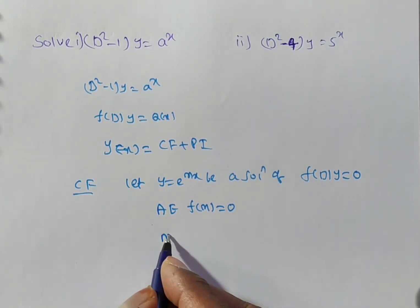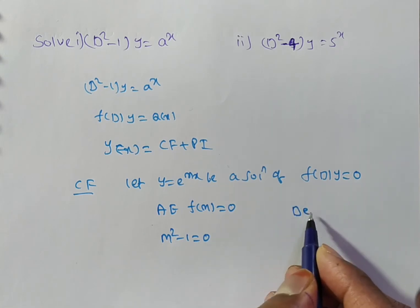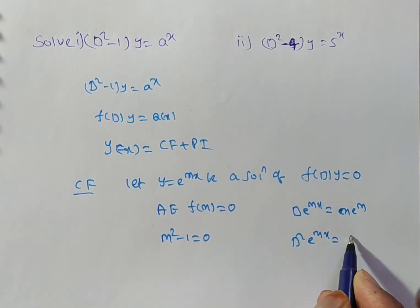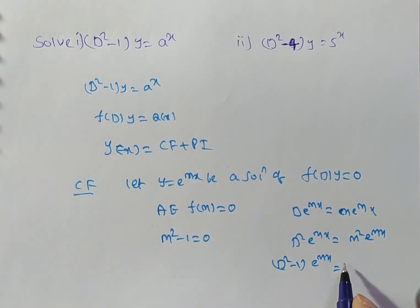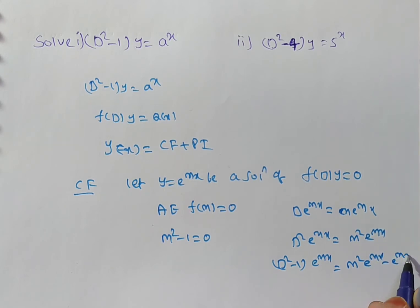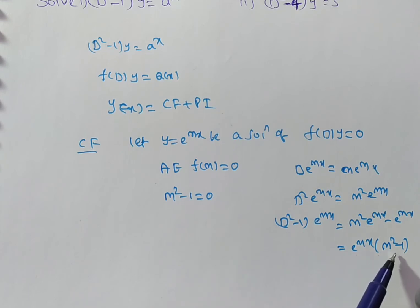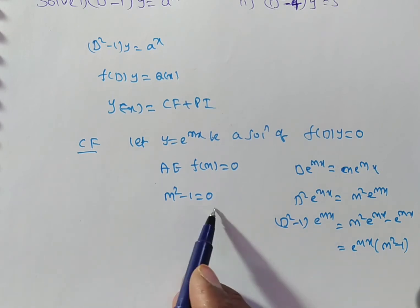In this case, we simply have m² - 1 = 0 as the auxiliary equation. To verify: D(e^(mx)) = m·e^(mx), and D²(e^(mx)) = m²·e^(mx). So (D² - 1)·e^(mx) = m²·e^(mx) - e^(mx) = e^(mx)(m² - 1). When this is equated to zero, since e^(mx) is never zero, we must have m² - 1 = 0. That is why it is called the auxiliary equation.